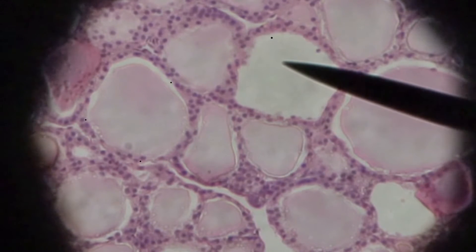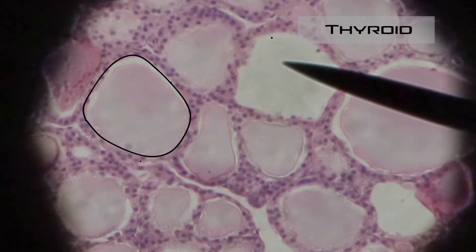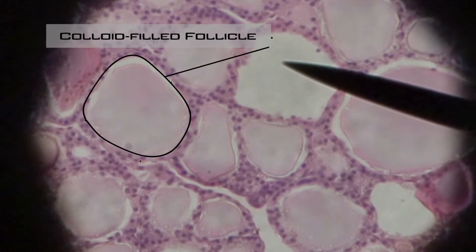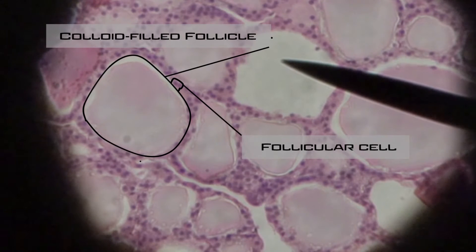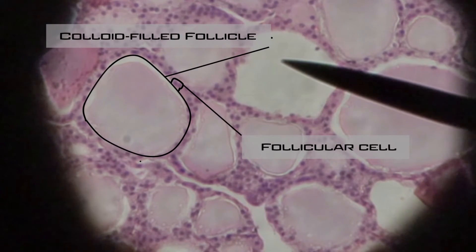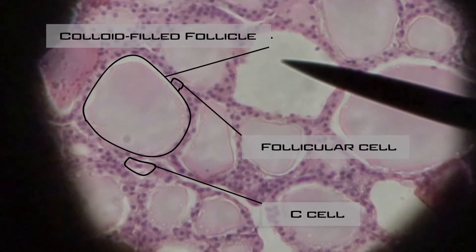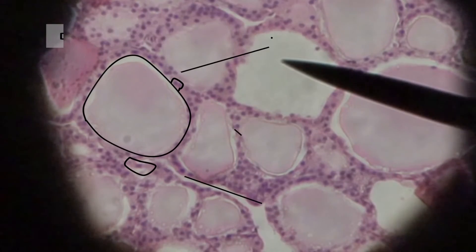Now we're looking at the thyroid and parathyroid slide. Looking at the thyroid first, you're seeing those colloid-filled follicles, and surrounding those follicles are the follicular cells. The follicular cells make thyroglobulin, which is stored as colloid inside the follicles. Thyroglobulin synthesizes and can also store the thyroid hormones. You can also see the C-cells between the follicles, which are responsible for making calcitonin, the hormone that helps regulate calcium in your blood.